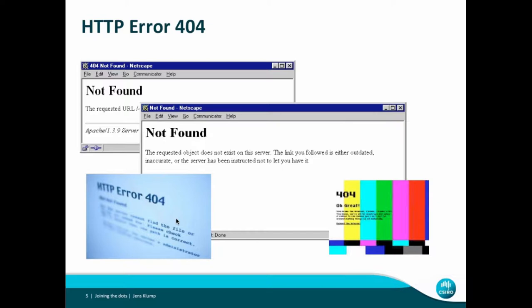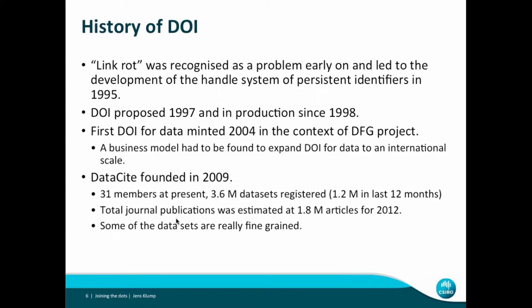When the internet was still young, one of the errors that popped up very early on — and has been with us ever since — is link rot. This problem of link rot was recognized early on and gave rise to the development of the Handle system, which was introduced in 1995. Based on the Handle system, the publishing houses introduced the Digital Object Identifier.